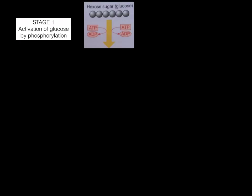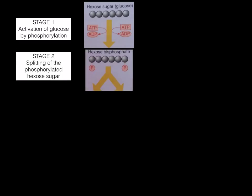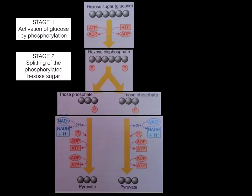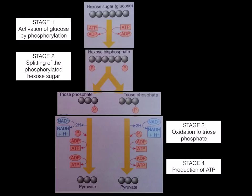The first stage is glucose being activated by phosphorylation — phosphates are added to glucose from ATP. The second stage is that this hexose bisphosphate is split into two triose phosphate molecules, going from six carbons to three. These then undergo a series of reactions where they are oxidized and ATP is produced. NAD is involved in the oxidation: as triose phosphate is oxidized, NAD is reduced. The end product is pyruvate.